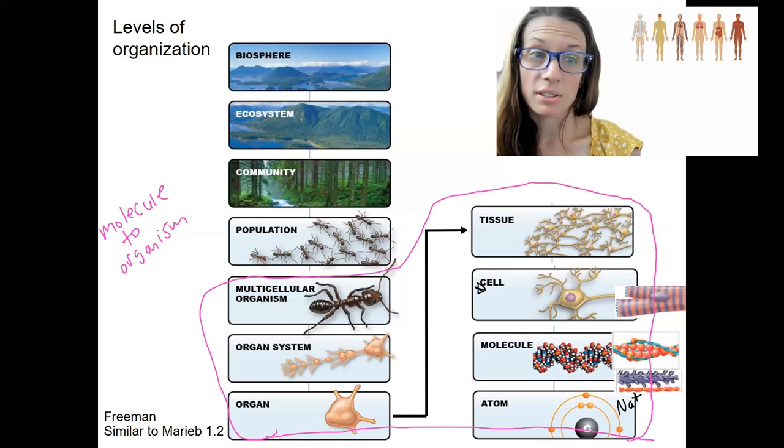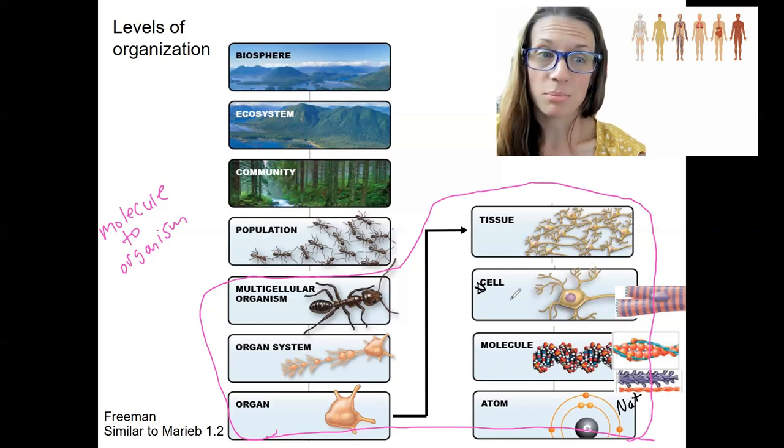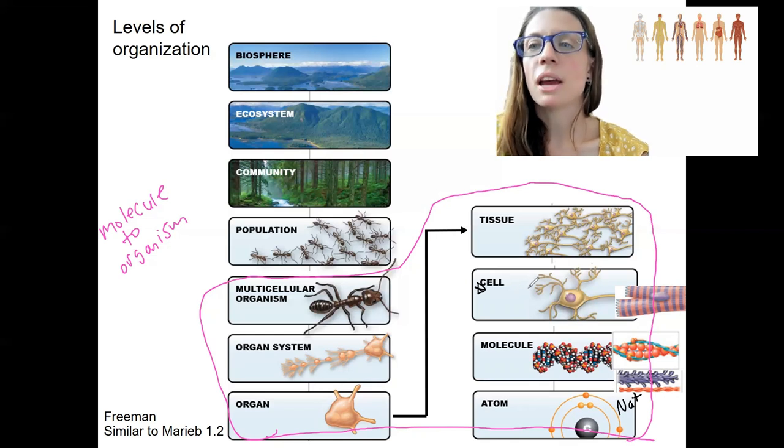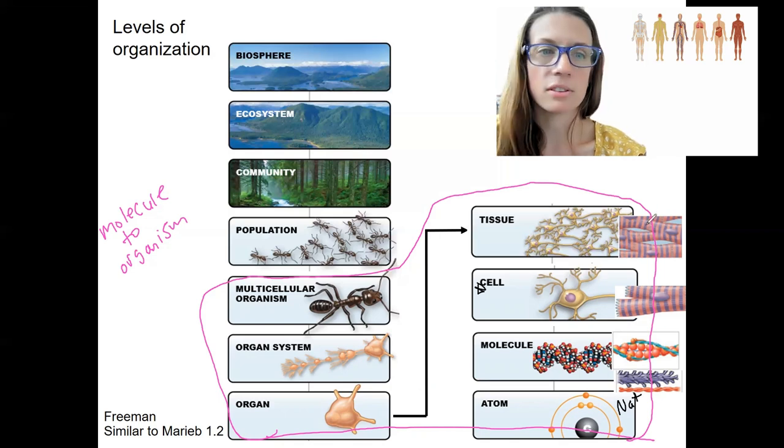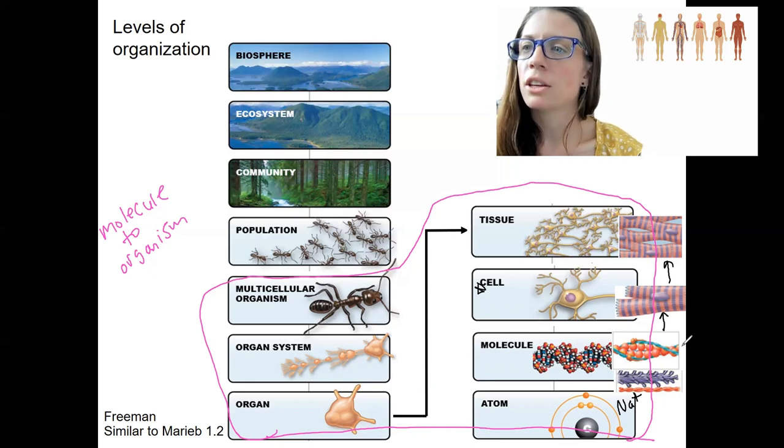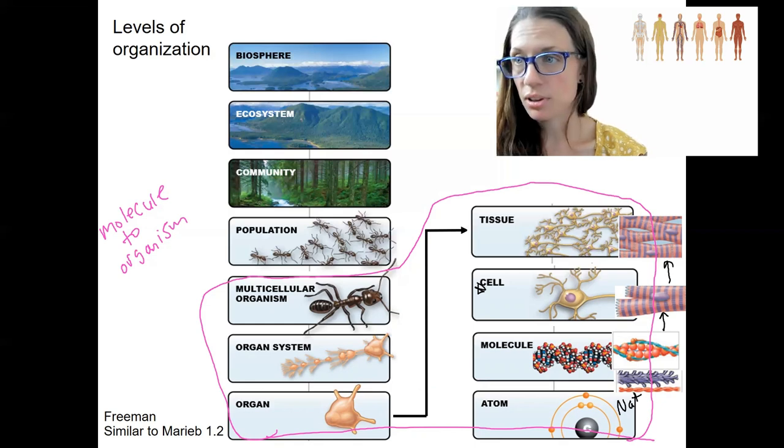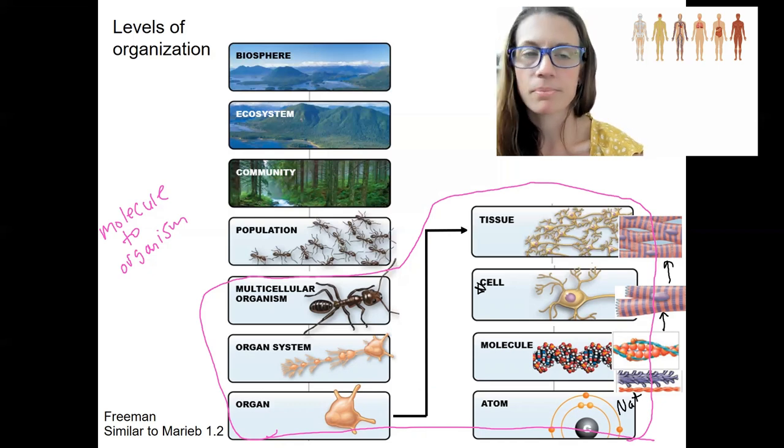So in multicellular organisms then, in a bacterium, it would just be a cell, that's the organism. In multicellular organisms, cells come together to form tissues. So here, these are neurons together. We're going to have muscle tissue, which is composed of muscle cells. These are all related to each other. The tissues are one cell type. They carry out the same function. They're composed of the same type of cells.